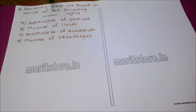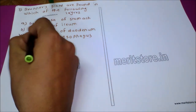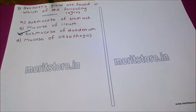The next question: Brunner's glands are found in which of the following layers — option A: sub-mucosa of stomach, option B: mucosa of ileum, option C: sub-mucosa of duodenum, option D: mucosa of esophagus. The correct answer is option C, as Brunner's glands are found in the sub-mucosa of the duodenum, which is a part of the intestine.